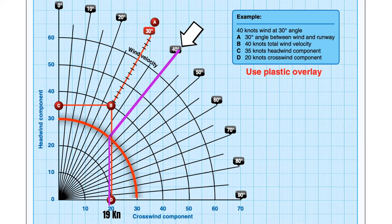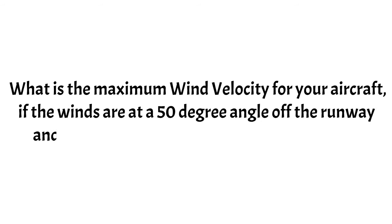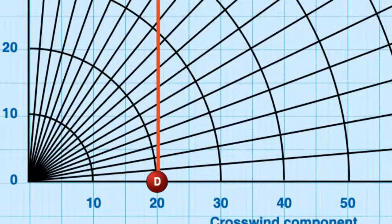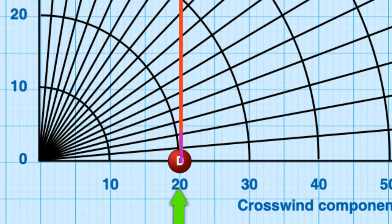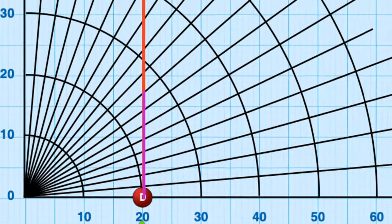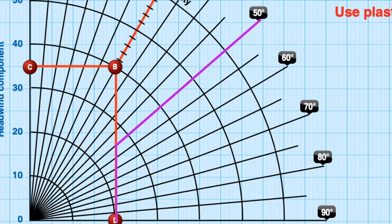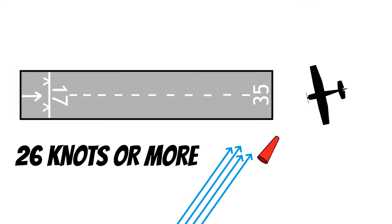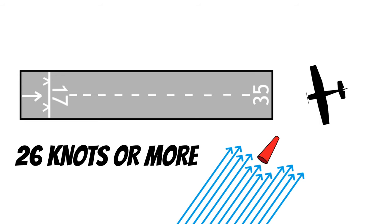This chart is super easy to use. Before we move on, I want to show you another way you could get asked this on the written test. What is the maximum wind velocity for your aircraft if the winds are at a 50-degree angle off the runway and your airplane's crosswind limit is 20 knots? Don't let this confuse you — all you have to do is run the chart backwards. We know 20 knots is our crosswind limit, so move up from 20 knots on the crosswind component axis until we hit our 50-degree line. I would say the wind velocity is about 26 knots. So if our wind velocity is 26 knots or more and the wind really is 50 degrees or more off the runway heading, we need to find another runway.